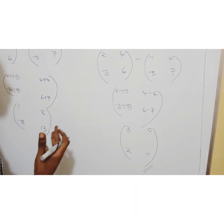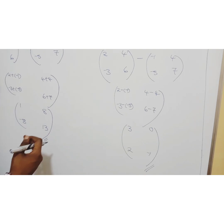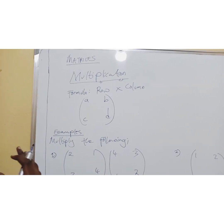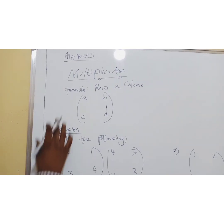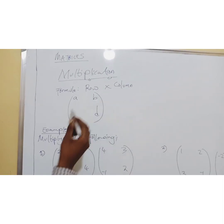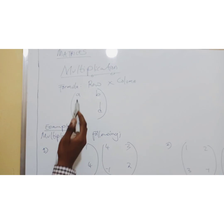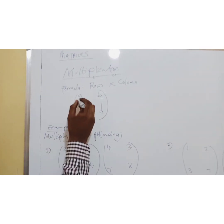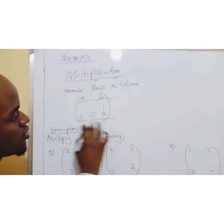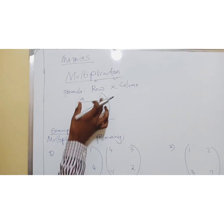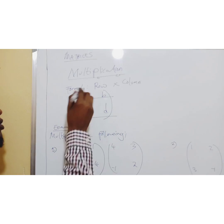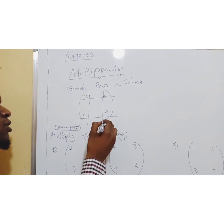Now I move on to the most important one: multiplication. The formula for multiplication is row by column. For example, suppose this is a matrix: A, B, C, D. The rows are horizontal — A, B is a row, C, D is a row. The columns are vertical — A, C is a column, B, D is a column. So the order here is 2 by 2: two rows, two columns.